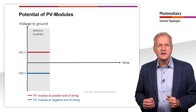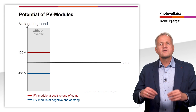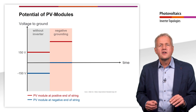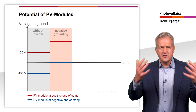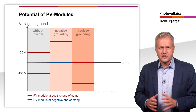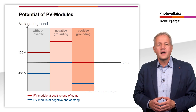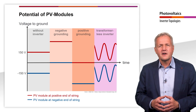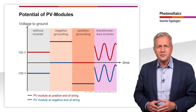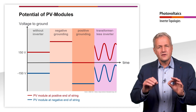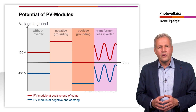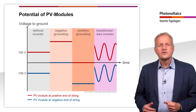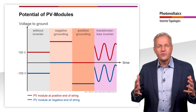If you want to prevent the PID, you have to shift the potential of the modules into the positive range. In the case of an inverter with a transformer, grounding the negative pole shifts all modules of the PV system to positive potential, and grounding the positive pole shifts them to negative potential. Hence, to avoid PID, the negative pole must be earthed. However, this is not possible with a transformerless inverter. The plus and minus poles of the generator are alternately connected to one phase of the network by the bridge circuit, while the neutral conductor is at ground potential. If you were to earth one of the generator poles, you would create a short circuit in one of the switching states. Since the neutral conductor is usually earthed, the DC voltage on the generator inevitably swings around the earth potential.